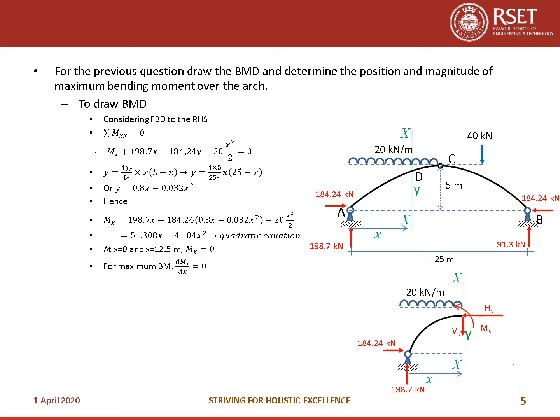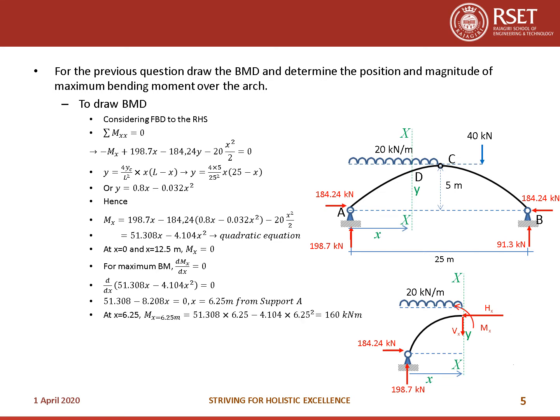To find maximum bending moment, set dM/dX = 0: 51.308 − 2 × 4.104 × X = 0, giving X = 6.25 m from support A. The magnitude at X = 6.25: MX = 51.308 × 6.25 − 4.105 × 6.25² = 160 kN·m.